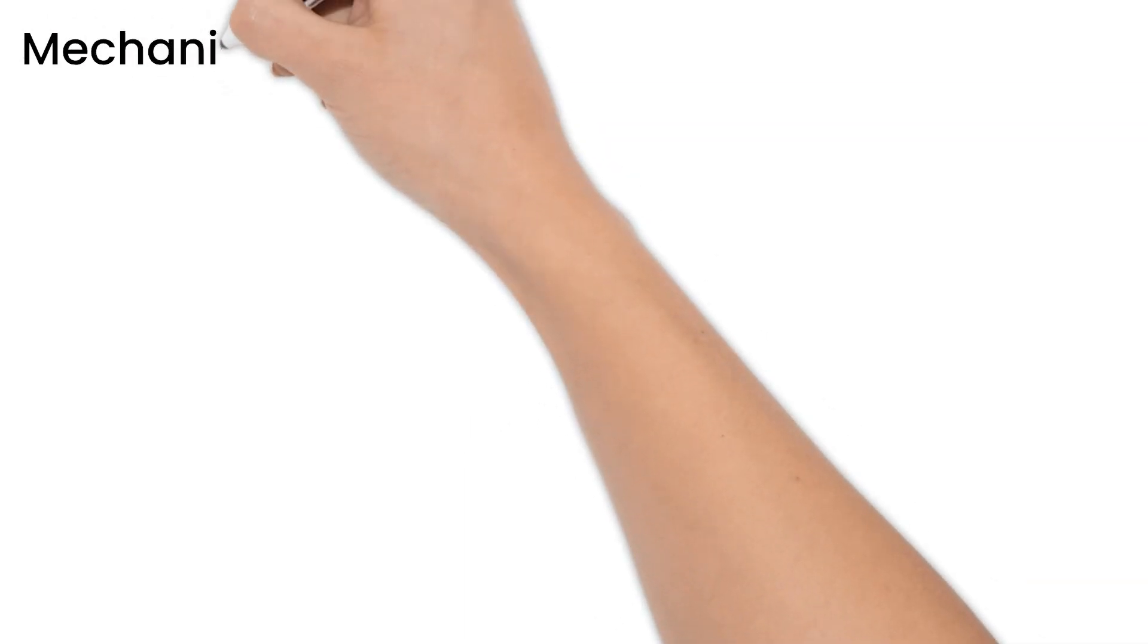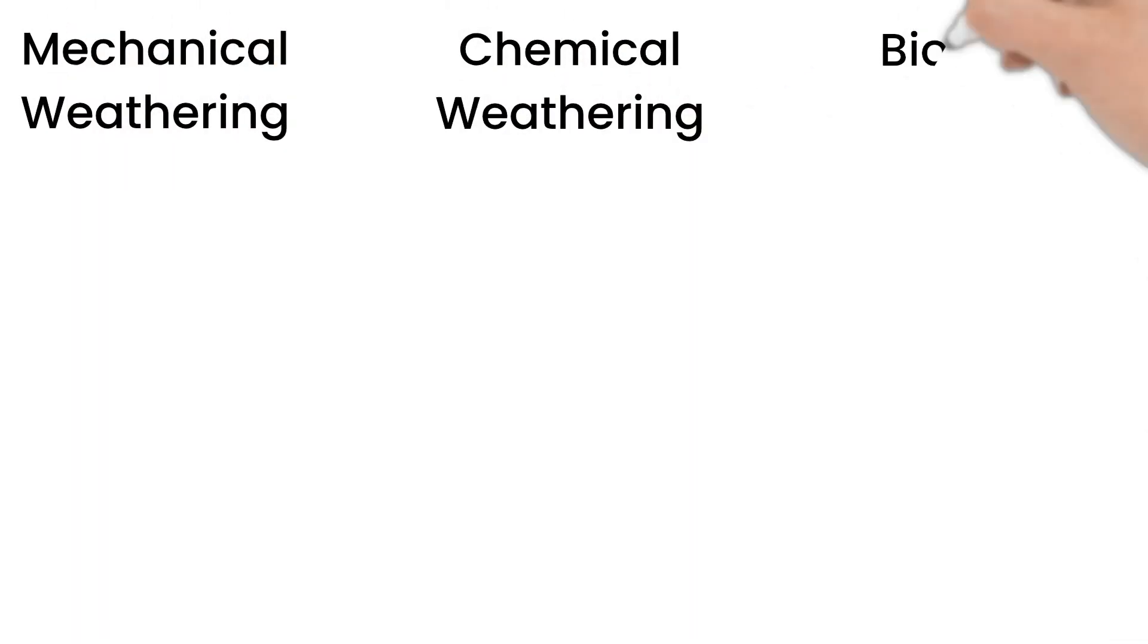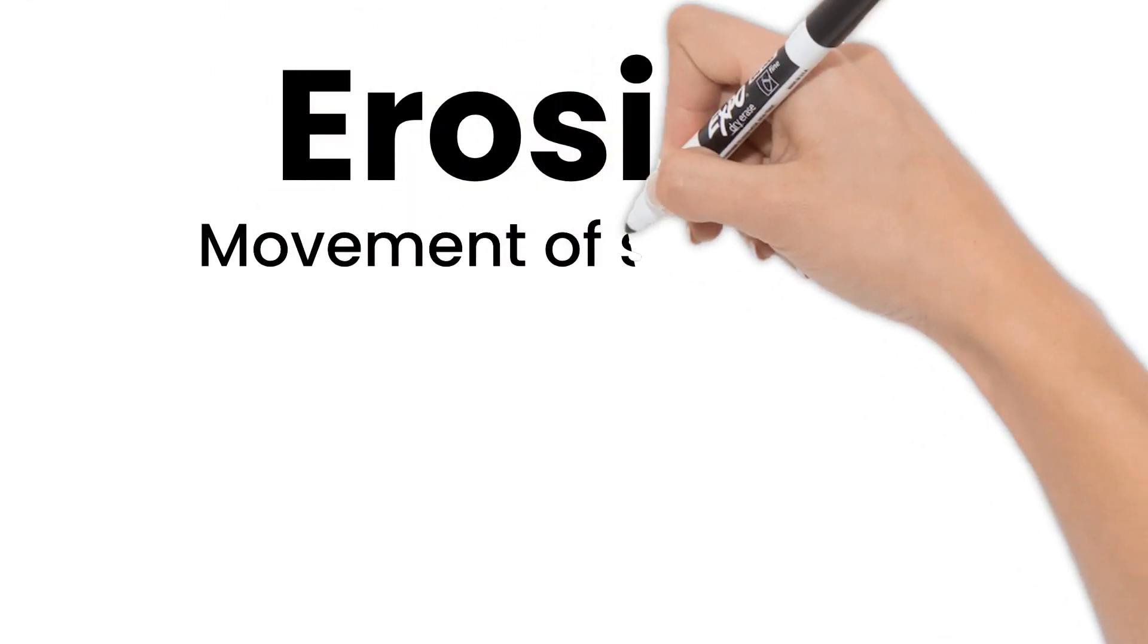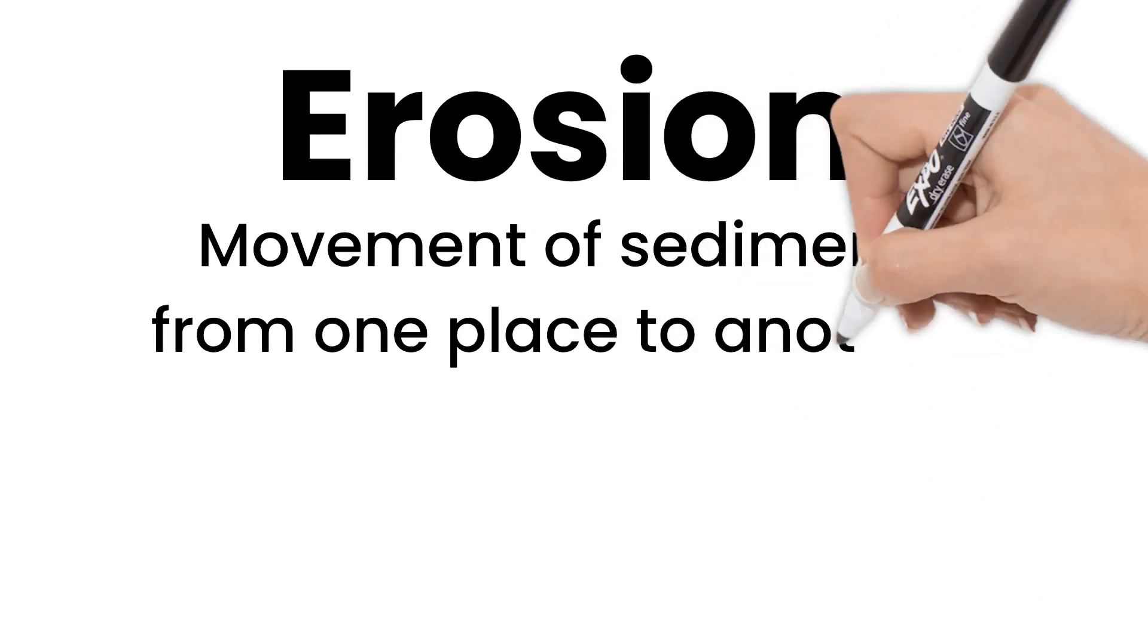Now that we've learned about mechanical, chemical, and biological weathering, let's discuss erosion. Erosion is the movement of sediment from one place to another.